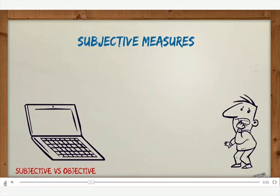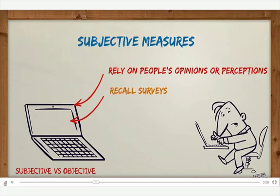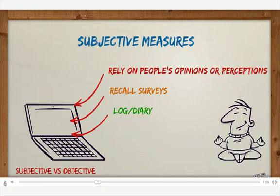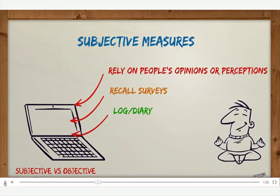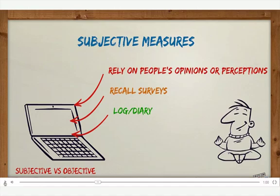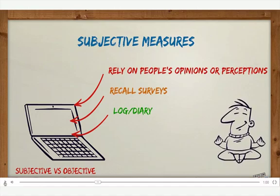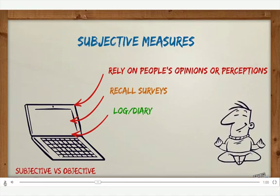Now we need to start looking at the measures of physical activity that we can use. The first section is subjective measures. These rely on people's opinions or perceptions, and that can include things like recall surveys or keeping a log or diary.